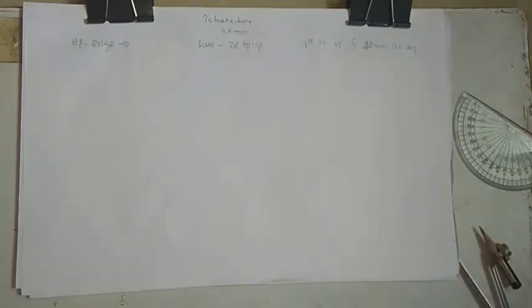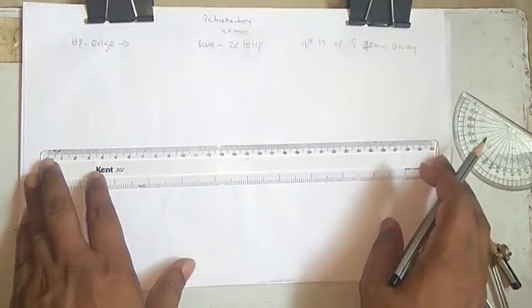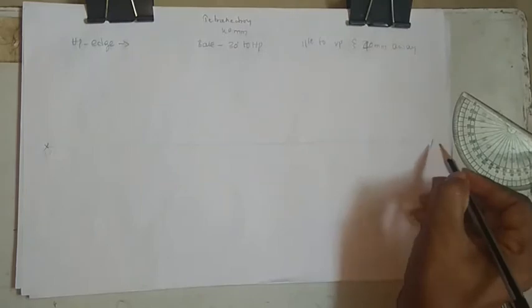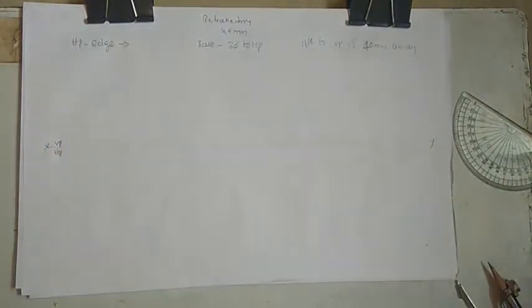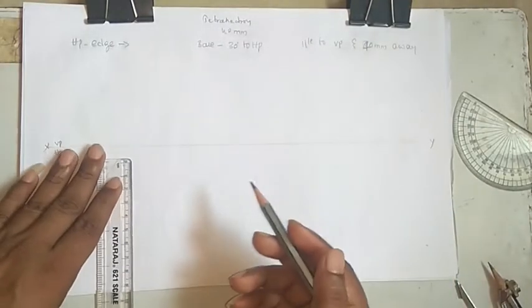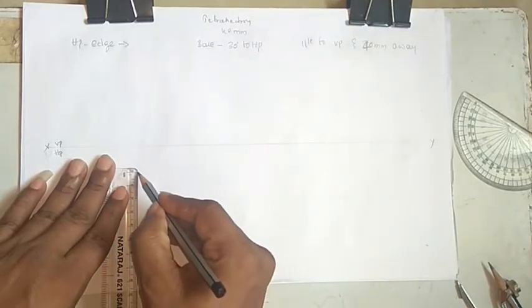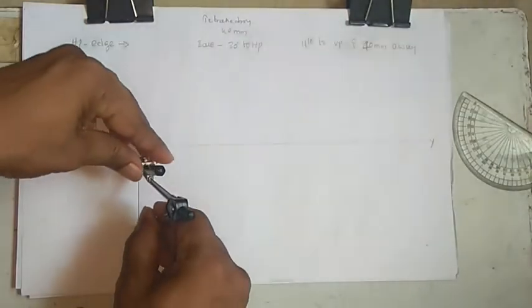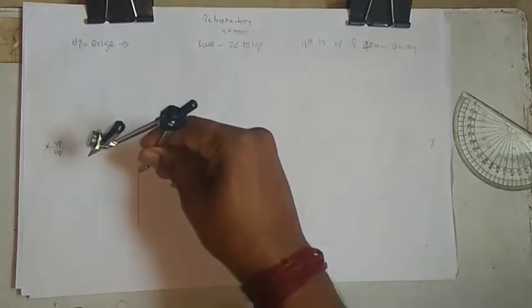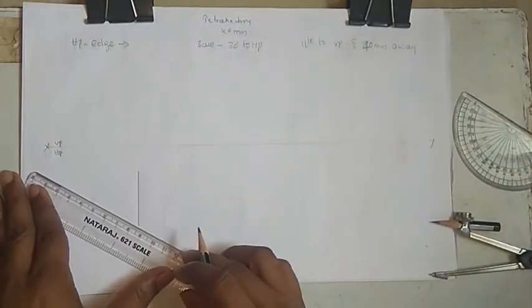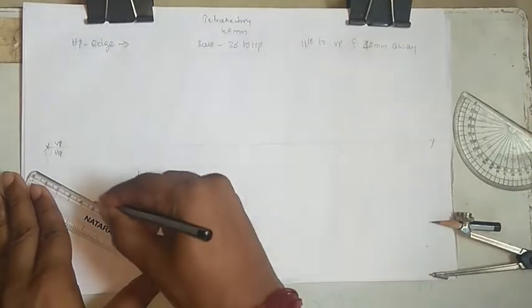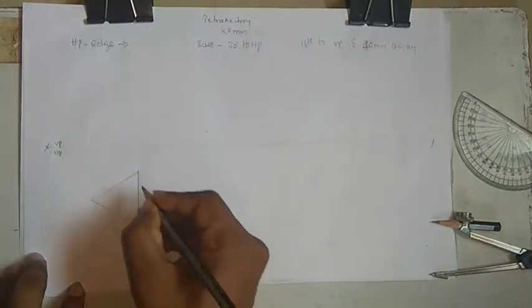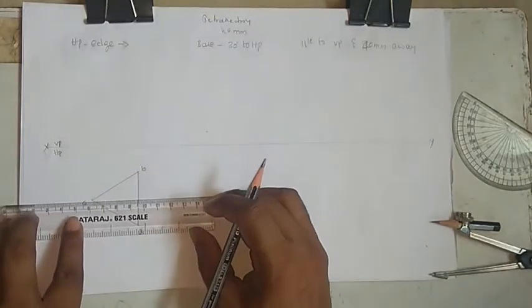As we know, a tetrahedron looks like an equilateral triangle from the top — it has four equilateral triangles. We will draw the XY line with VP and HP. To start, take the resting side to the right, mark 40 mm, and cut with an arc to get the equilateral triangle. This gives the initial top view — label the base as A, B, and C.